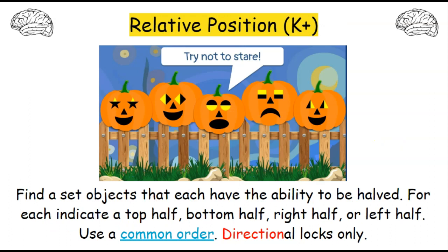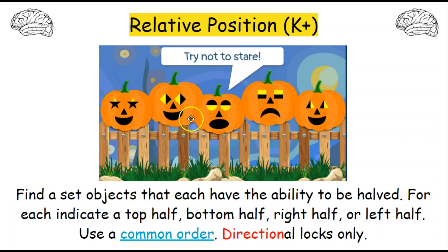This is a relative position puzzle, appropriate for kindergarten and up. It's a mental puzzle so it works for a physical or digital breakout. You find a set of objects that can each be halved — indicating a top half, bottom half, right half, or left half — and use a common order. This only works for directional locks. In this picture I have pumpkins in a row, each with part of their eyes highlighted in yellow, showing the direction. So the first is up, the next left, then down, then up, then right.